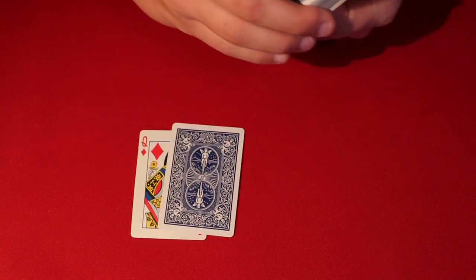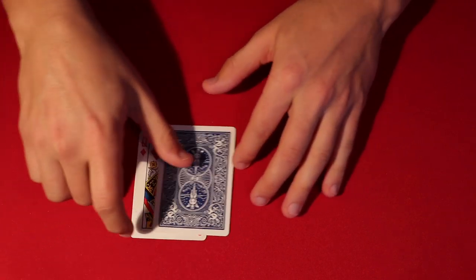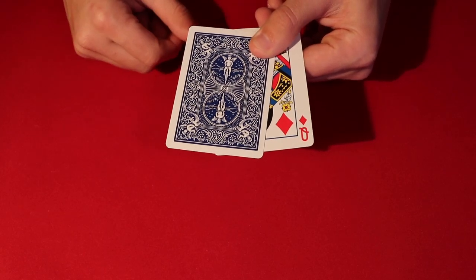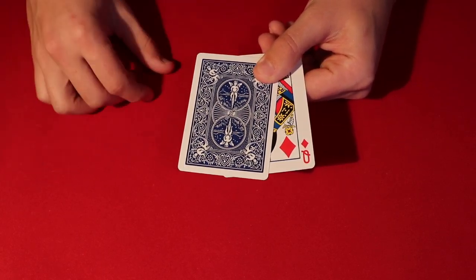So what I'm gonna do is give you both cards. We don't need the rest of the deck for the trick. Now you're gonna tell the spectator, okay, so you have two cards here, the Ace of Spades and the Queen of Diamonds. Just say whichever one you want.